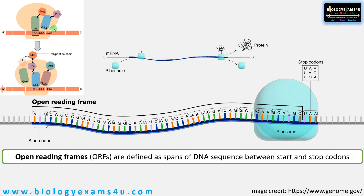This is what is actually happening. Ribosomes move through the mRNA during translation. The tRNA with anticodon UAC binds to the AUG start codon, carrying the amino acid methionine — the starting amino acid in a polypeptide in the case of eukaryotes.